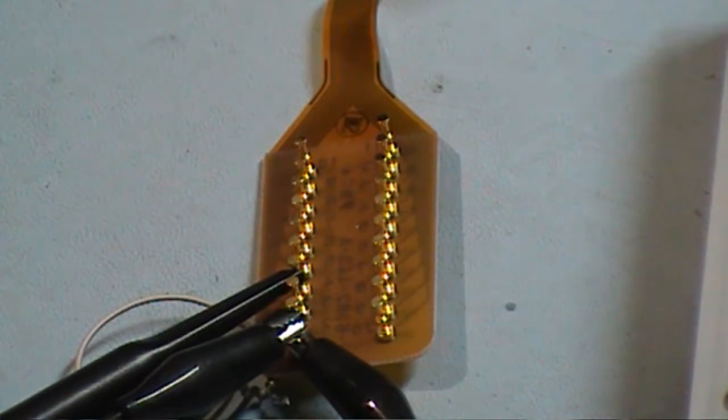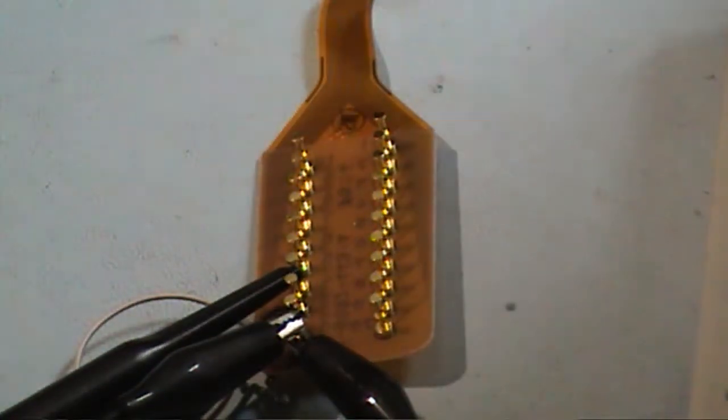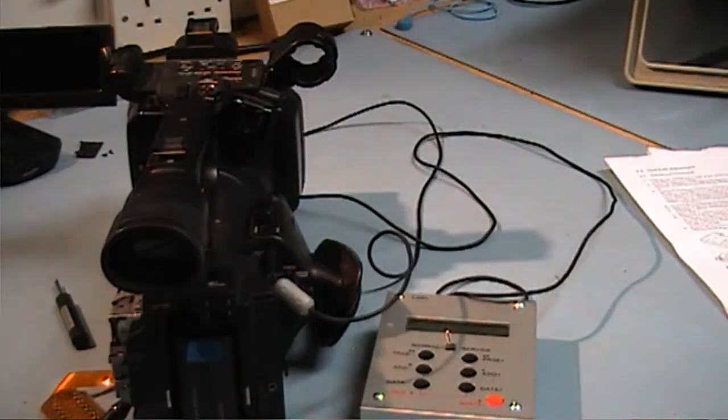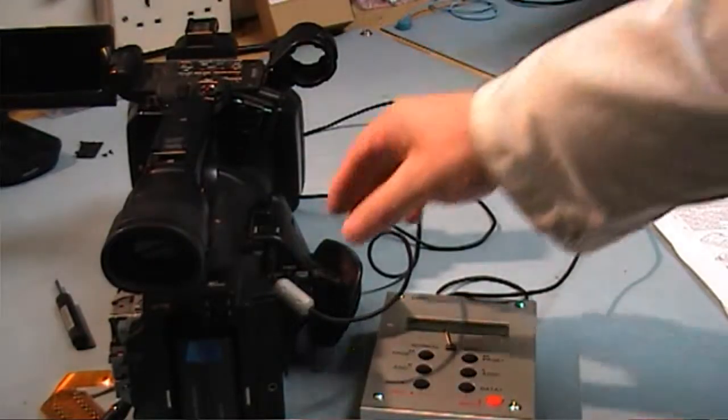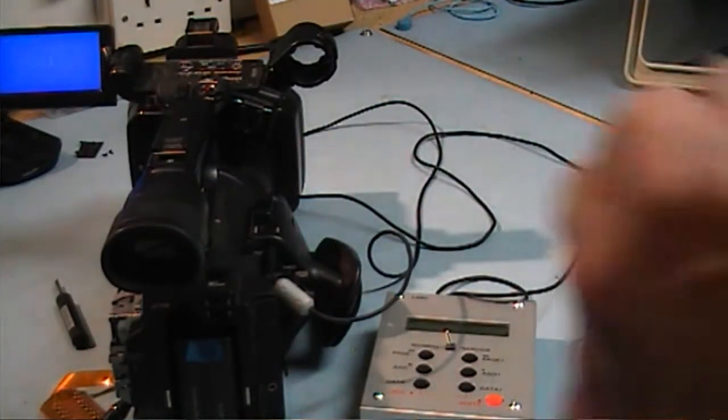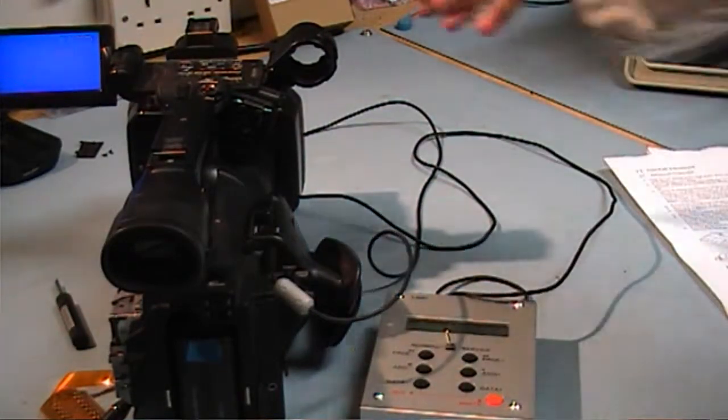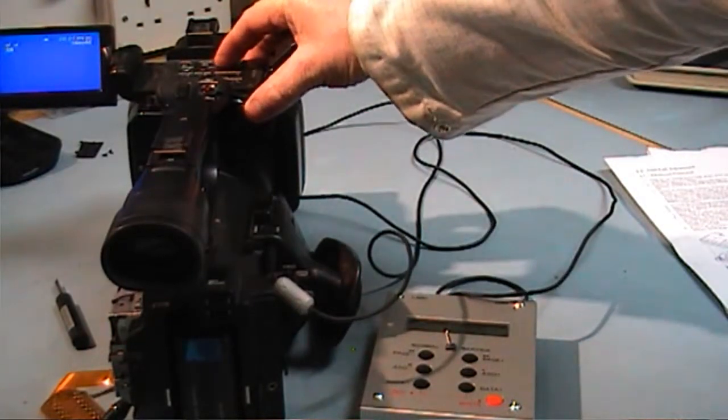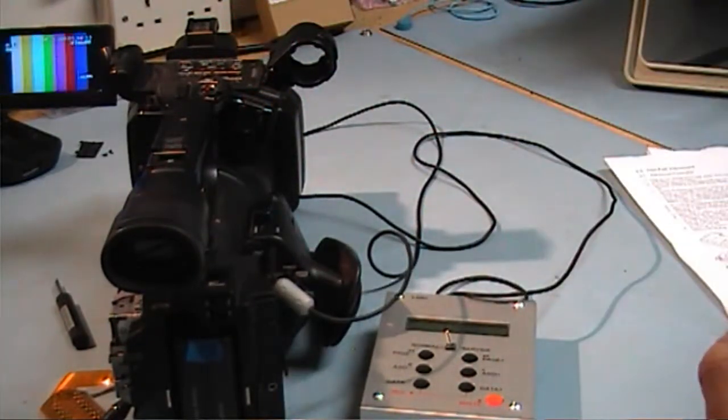Now we have to switch on the camera and put it into the play mode. Put the unit into the VCR mode, press the play button, and the unit is up and working.